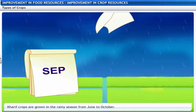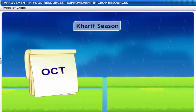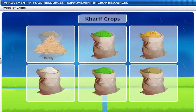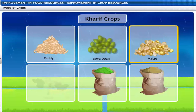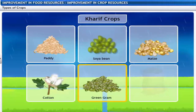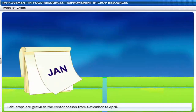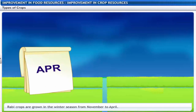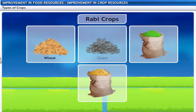Kharif crops are grown in the rainy season, which is from June to October — this season is called the Kharif season. Paddy, soybean, maize, cotton, green gram and black gram are Kharif crops.